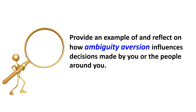In this video, we talked about ambiguity aversion — people's tendency to choose an option with a known probability over an option with an unknown probability. Now it is time for you to provide an example of ambiguity aversion and reflect on how it influences decisions made by you or the people around you.